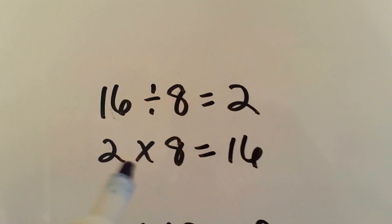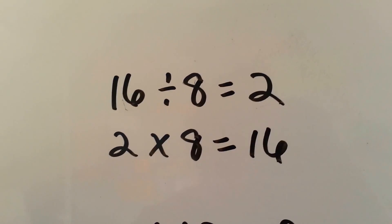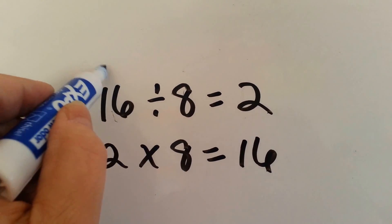16 divided by 8 equals 2. 2 times 8 equals 16.